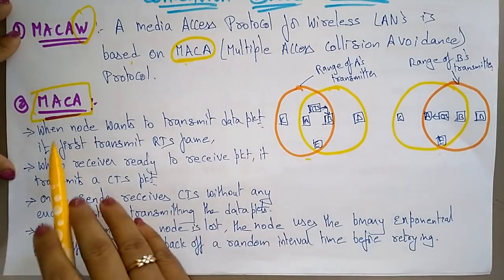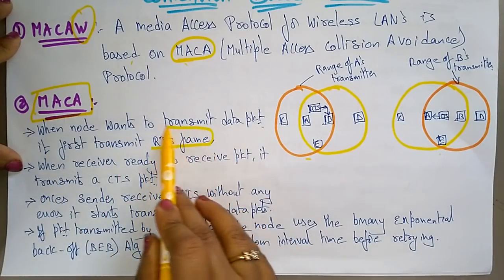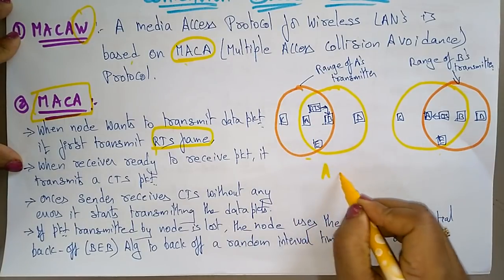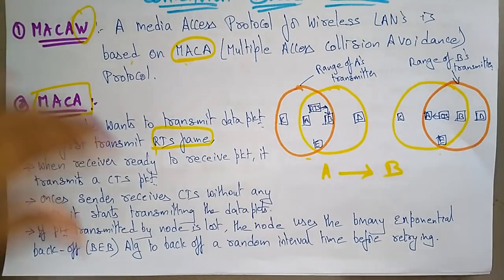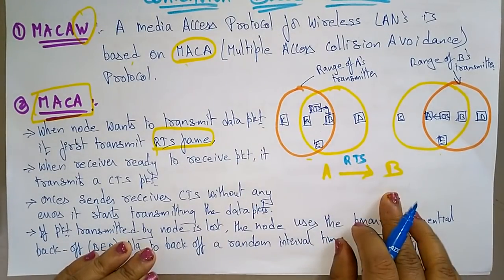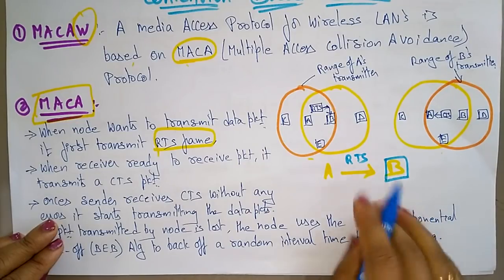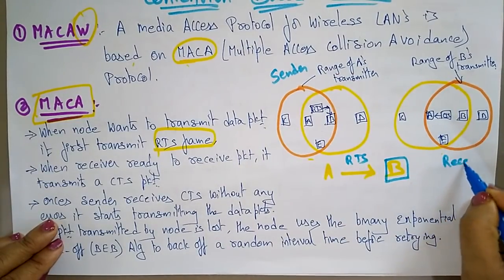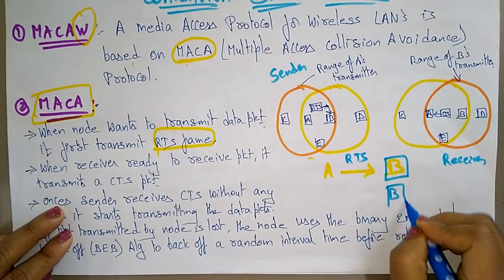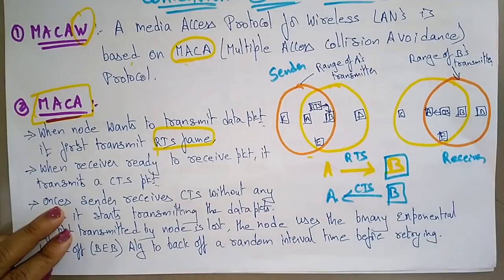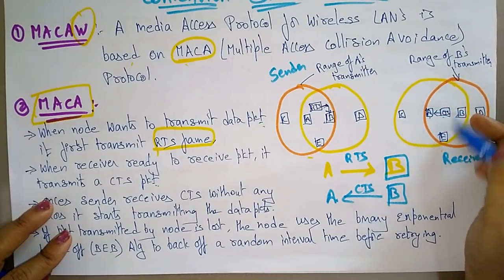Here we have transmitter A and transmitter B. When a node wants to transmit a data packet, it first transmits a Request to Send frame. Suppose node A wants to transmit data to B — whenever A wants to send, it first asks 'Request to Send — shall I send the packet?' When the receiver B is ready to receive the packet, it sends a Clear to Send packet back to A.